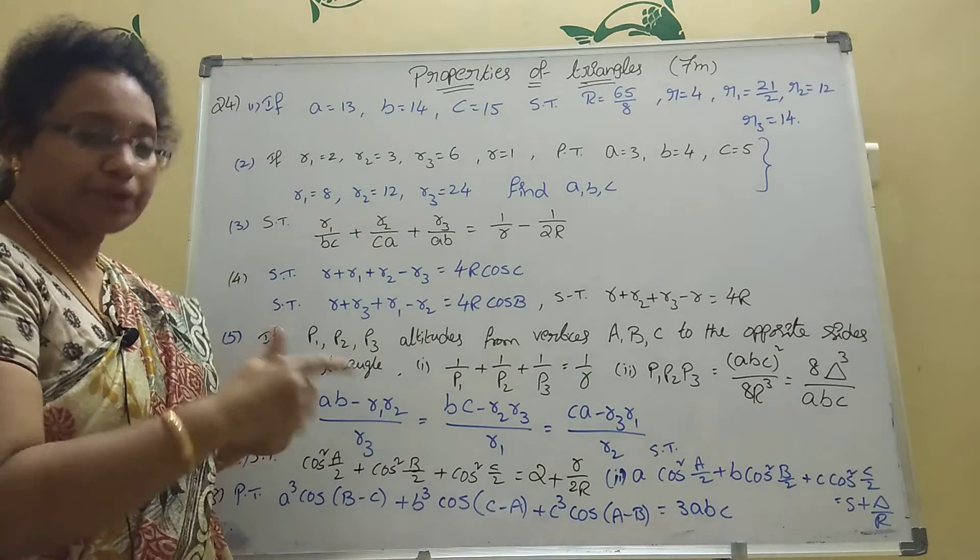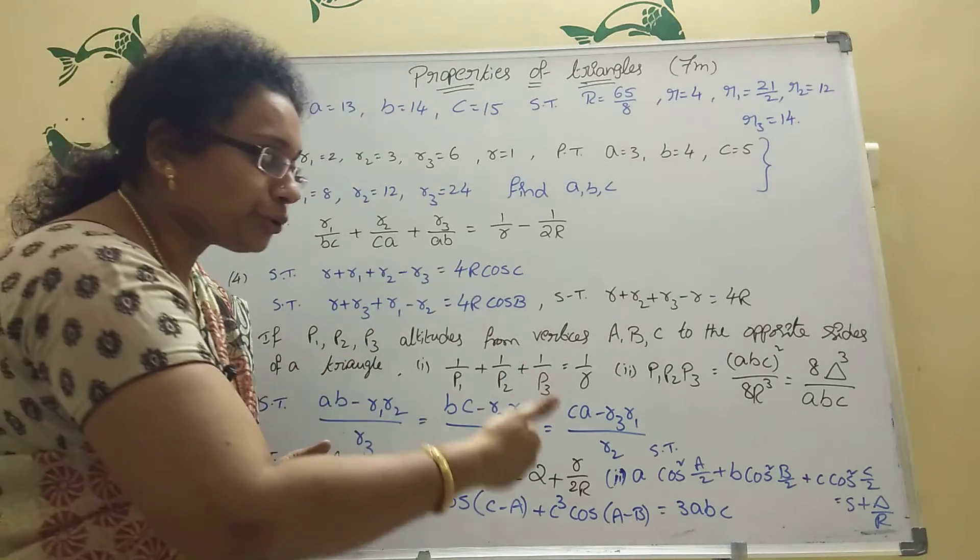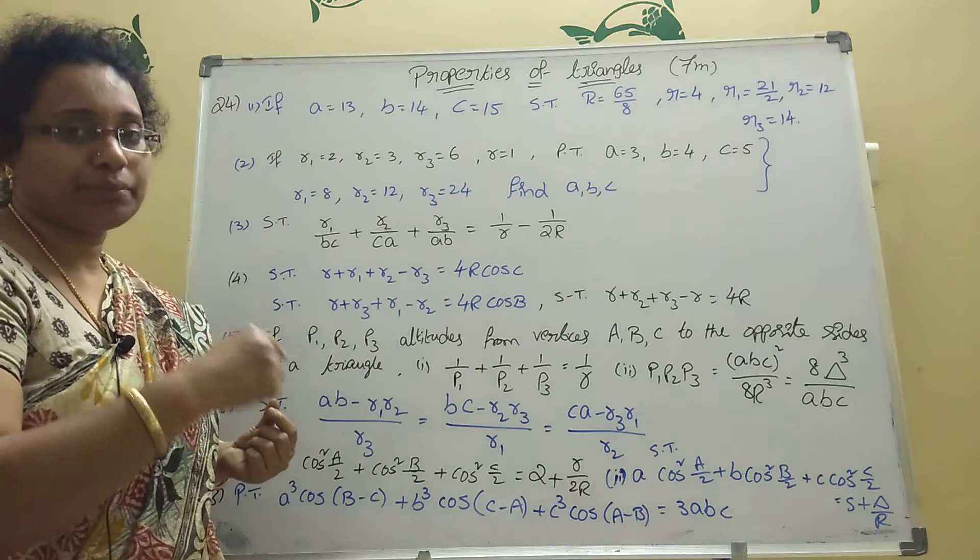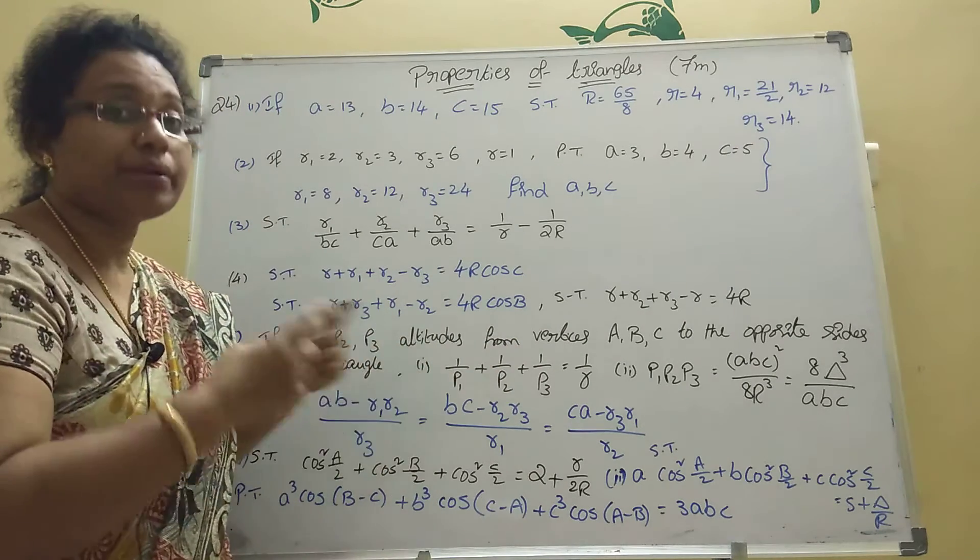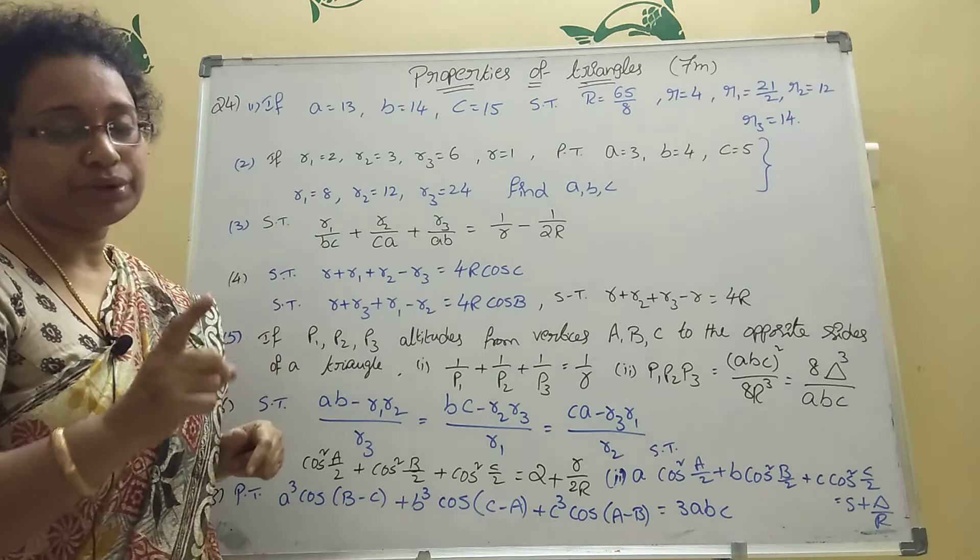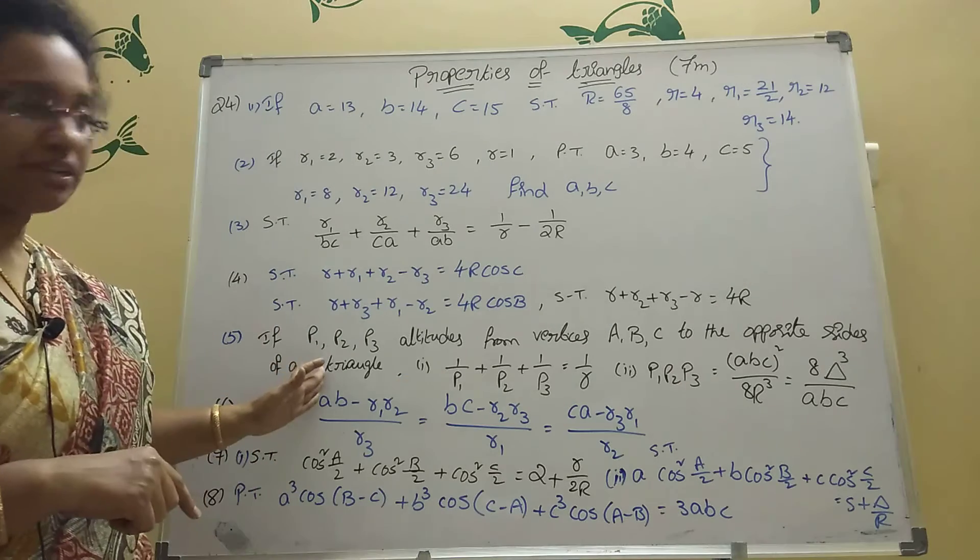ABC whole square divided by 8R cube and also equal to 8 delta cube is divided by ABC. This one also very easy. This nothing is there, but one triangle you should draw. It is very important for the triangle. It will come one mark. It is a very important fifth bit also.